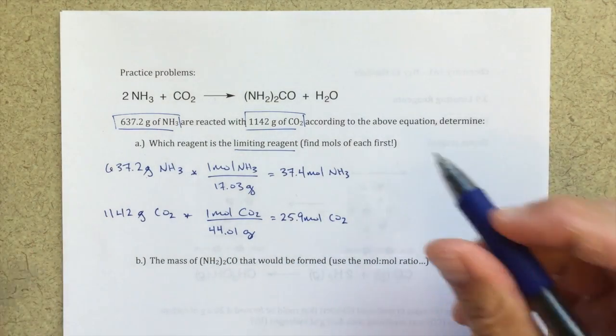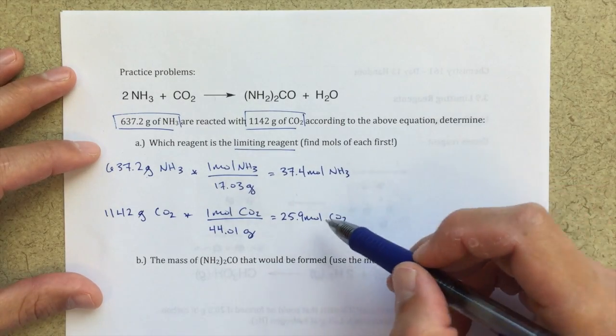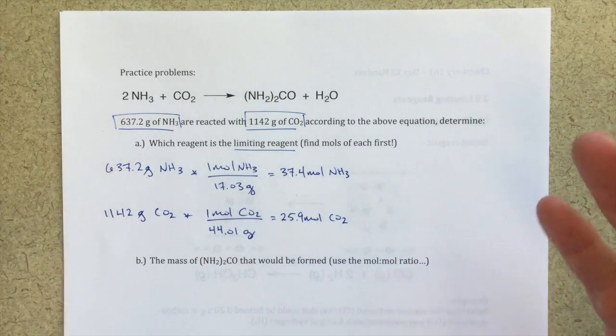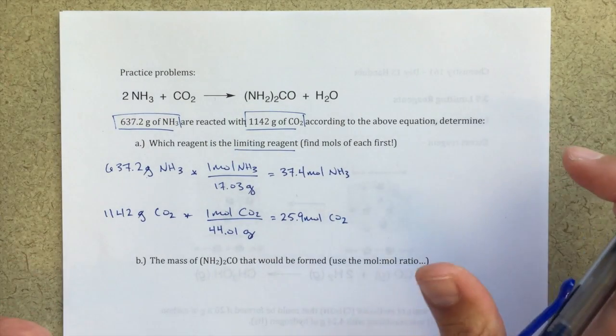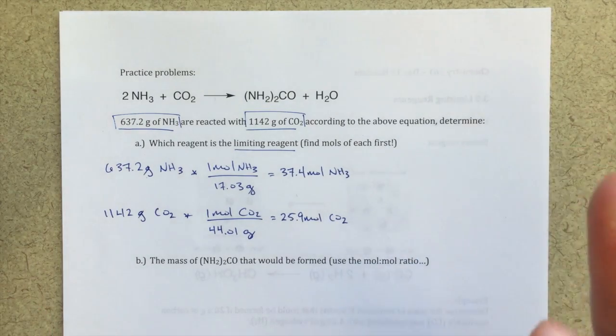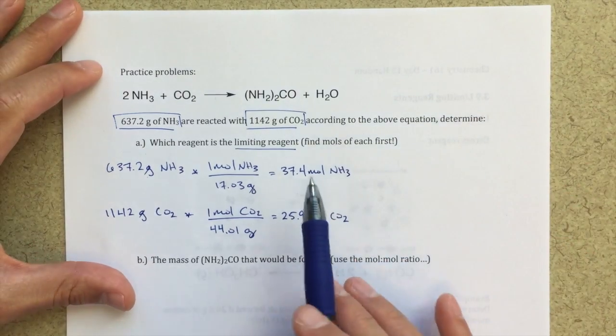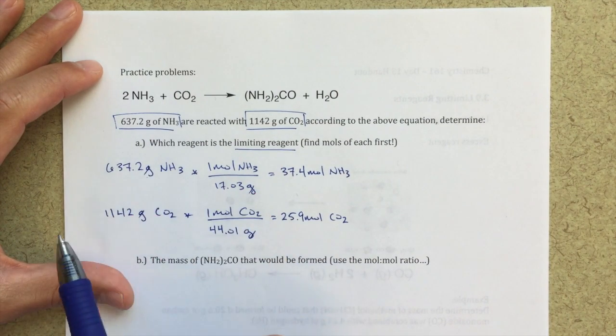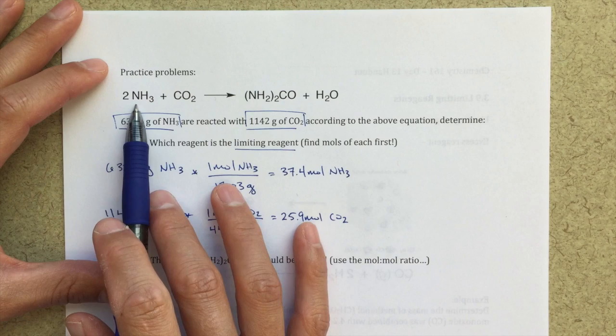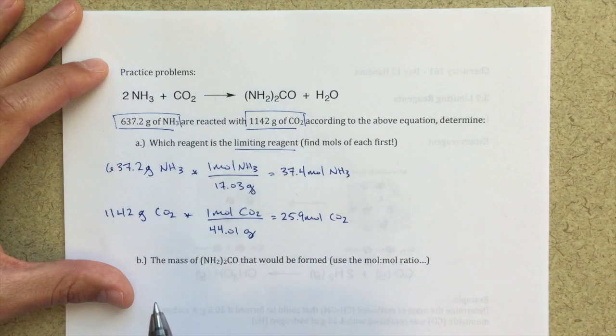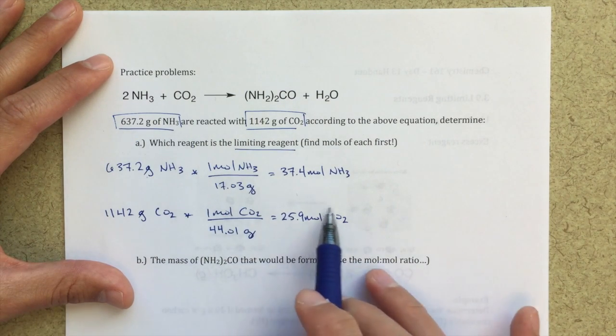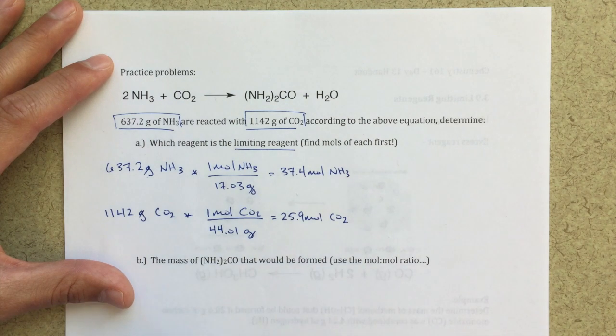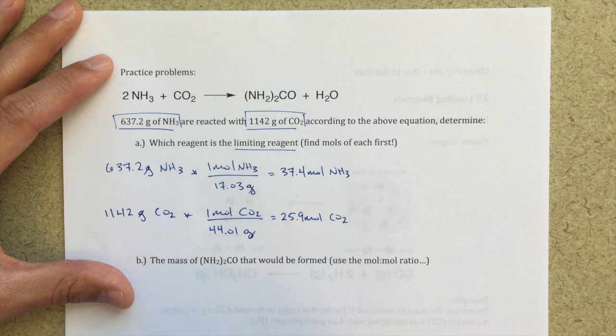At this point, we might look at these and might say, well, I've got less moles of CO2, does that mean it's a limiting reagent? No. Okay, a really common mistake. But what we really need to do now is say, let's go back to our mole-to-mole ratios, the stoichiometry of this problem. For every two moles of NH3, it only takes one mole of CO2 to run this reaction. So even though I have less moles of CO2, it might not be the limiting reactant if I run out of NH3 first. Remember, the limiting reactant is the reactant that's going to run out first.